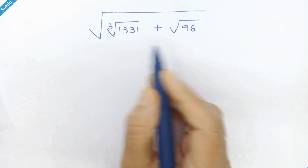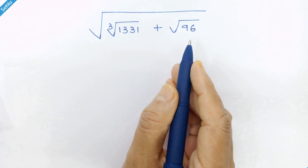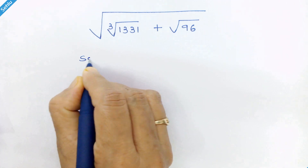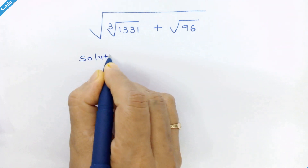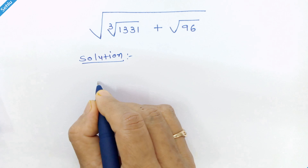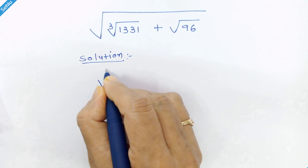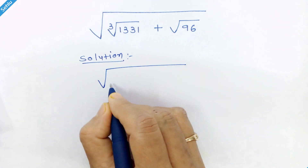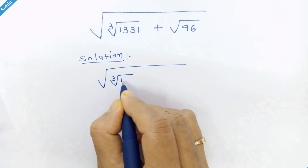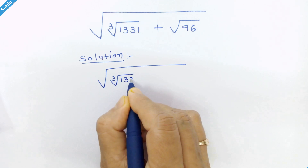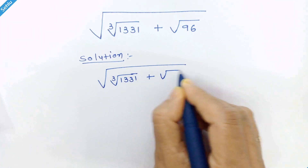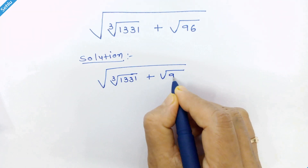Hello friends. Here is our question — how do we simplify this? Let's start. We have the square root of the cube root of 1331 plus the square root of 96.